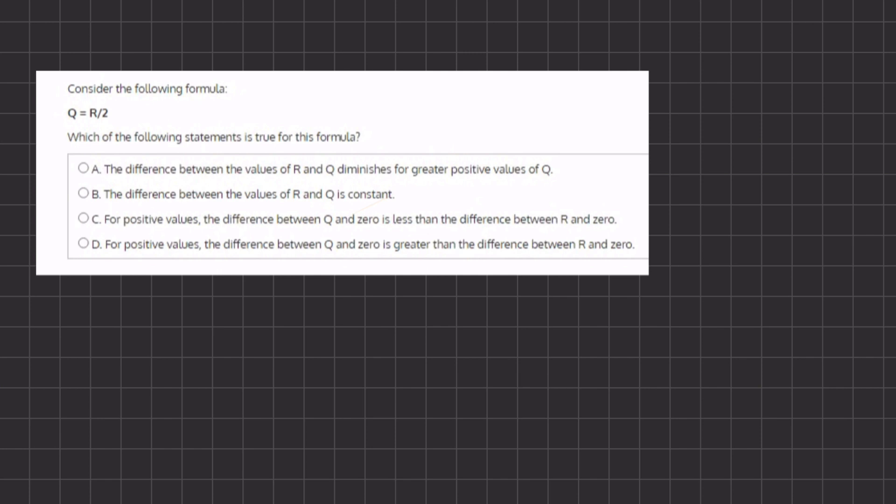We know that Q equals R divided by 2, and if we want to know what the value of R is, we can multiply 2 on both sides, and we get R equals 2Q.